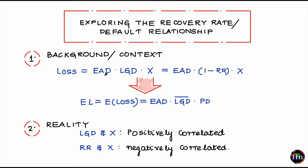It is the exposure amount times the loss given default. Here, the loss given default (LGD) is an input expressed on a per dollar basis. I am basically expressing the reality that the entire exposure is not lost — I do end up recovering a portion of this exposure, because there might be collateral backing the exposure. When I liquidate and sell off the collateral, the proceeds can help reduce the total amount I lose in the event of default. This loss given default can also be written as one minus the recovery rate.